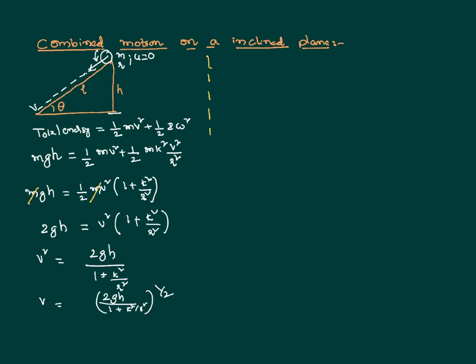It is very clear that the velocity of the body is independent of the mass of the body. But it depends on the size and shape of the body, because it depends on the radius of gyration and of course the radius of the body itself.